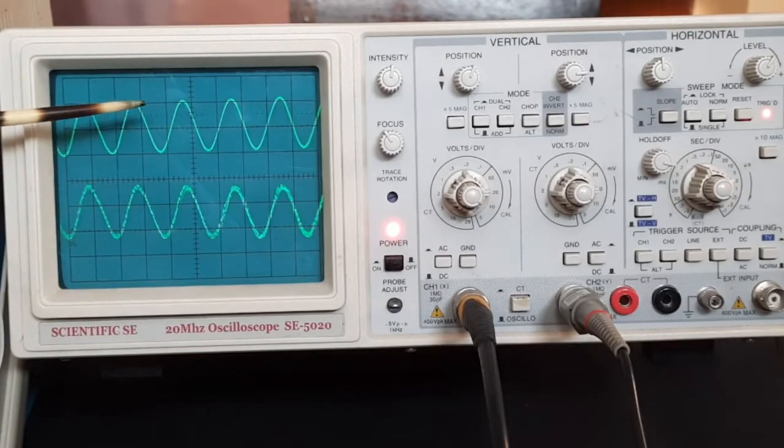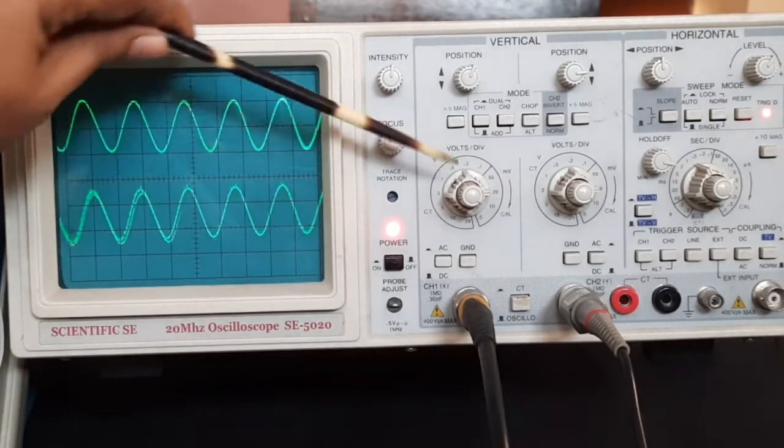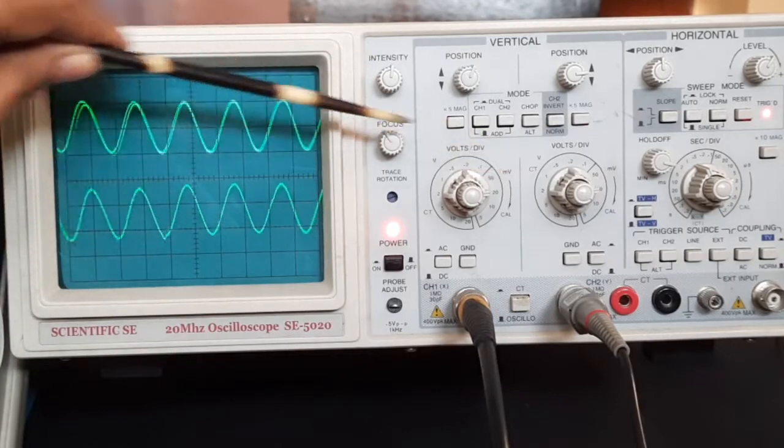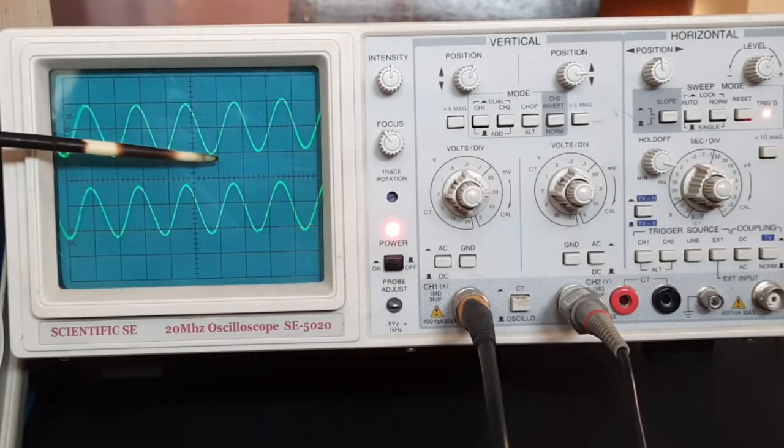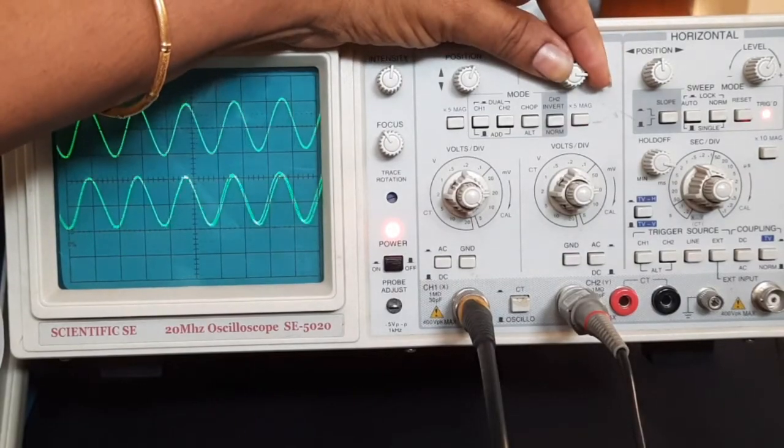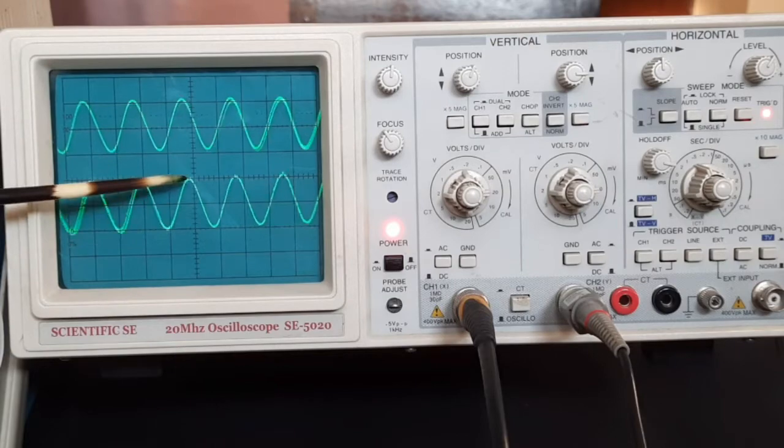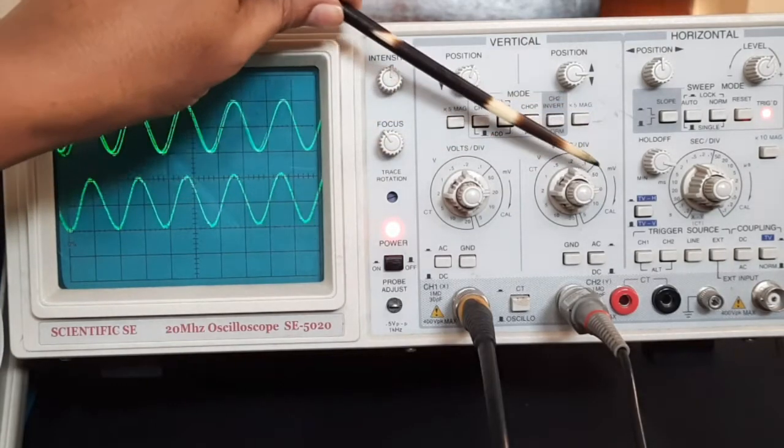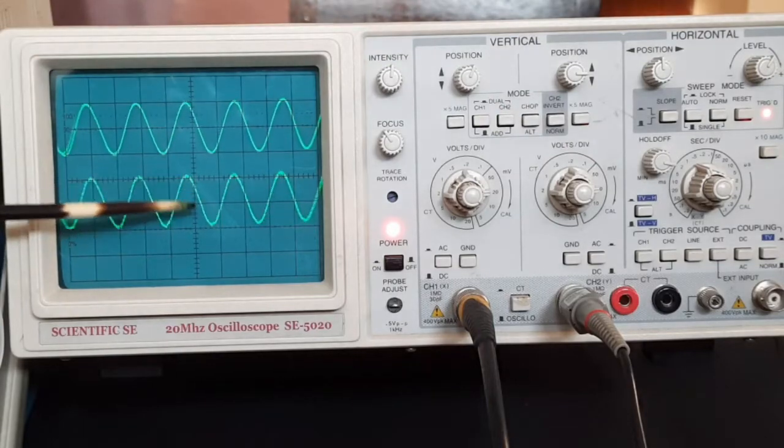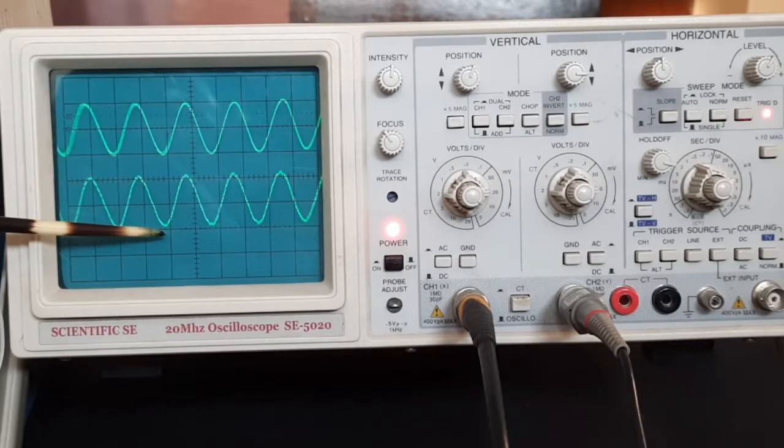Now we have to measure the magnitude. It is two divisions and the multiplier is 20, so 40 millivolt is the input voltage. Output, let us measure it exactly. It is again two divisions, so two divisions into its multiplier, that is also 20 millivolt per division, so the output is 40 millivolt total.